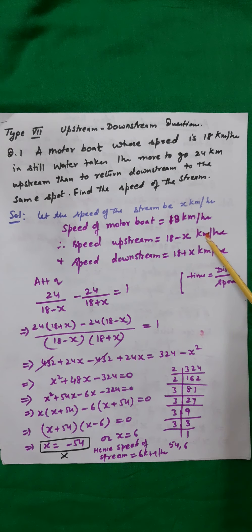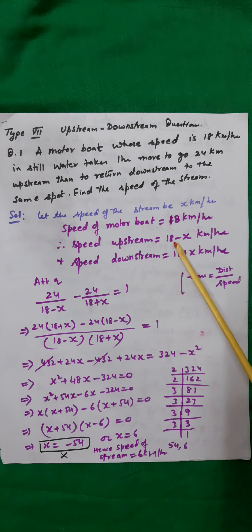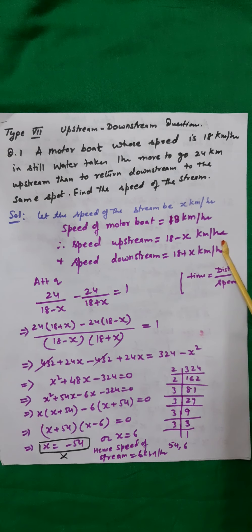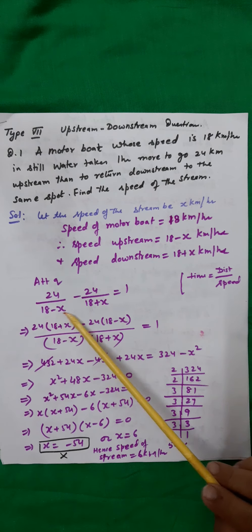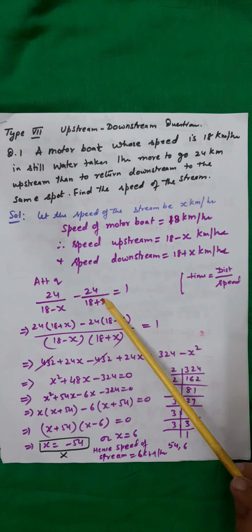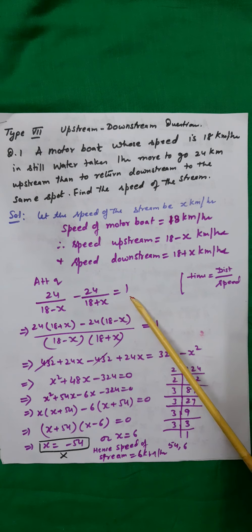According to the question, the difference between the two times when the motorboat is going upstream and downstream is 1 hour. Time is distance upon speed. Here the distance is 24 km. The speed upstream is 18 minus x km per hour. Therefore, time upstream will be 24 upon (18 minus x), and time downstream will be 24 upon (18 plus x), and these differ by 1.